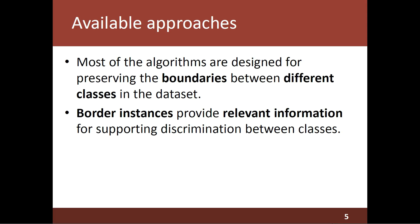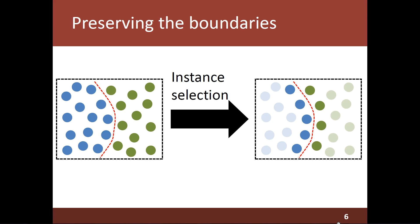Regarding the approaches available in the literature, most of them are designed for preserving the boundaries between different classes in the dataset. These approaches are focused on preserving the border instances, which represent the information that is relevant for supporting discrimination between classes. In this picture, for example, we can see a representation of the process of selecting the border instances. At the left we can see a complete dataset with two distinct classes, represented by blue balls and green balls, and at the right we can see the resulting dataset produced by an approach that preserves the boundaries.